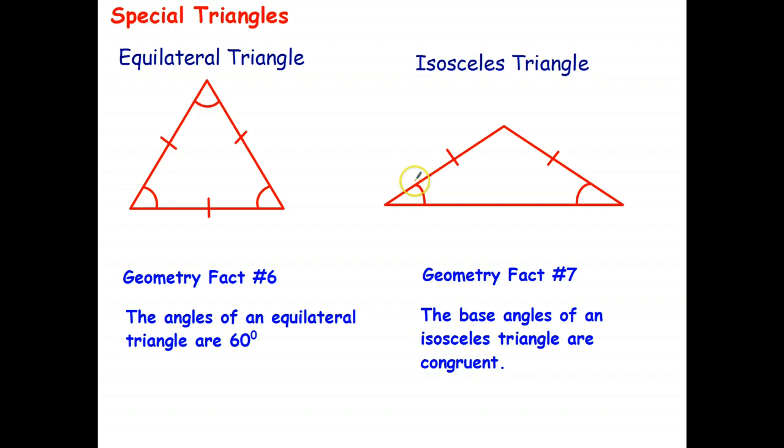And by symmetry, that must mean the two base angles must also be equal. So geometry fact number seven, the base angles of an isosceles triangle are congruent. And we get the base angles by just saying what's opposite each of the equal sides.